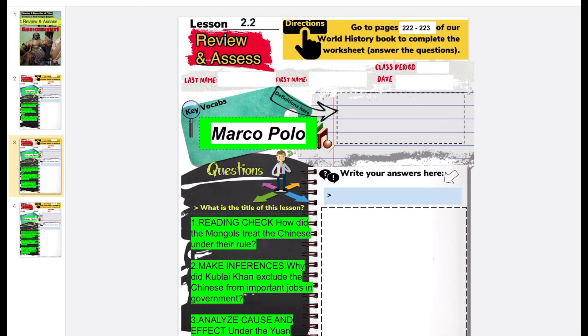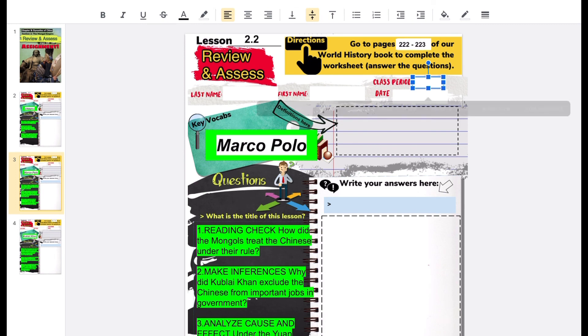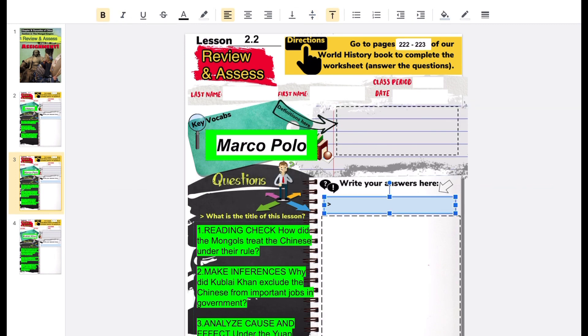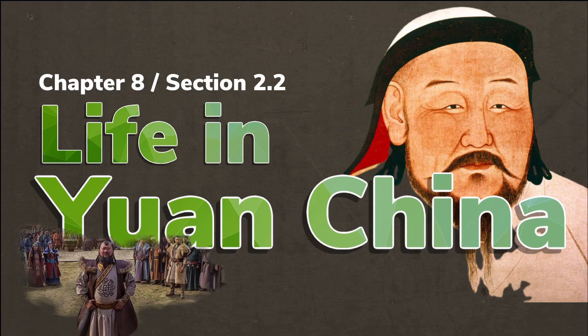Go ahead and open the review and assess assignment in Google Classroom, Section 2 from Chapter 8 — the lesson we just covered on life in Yuan, China — and answer the following questions. Don't forget to fill in your name, class period, and date. The key vocab person is Marco Polo. Write the title of the lesson and answer in complete sentences using your own words to get full credit. That is our lesson for today, Chapter 8, Section 2.2, Life in Yuan, China.